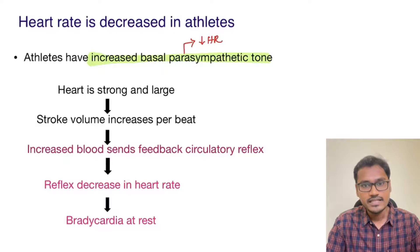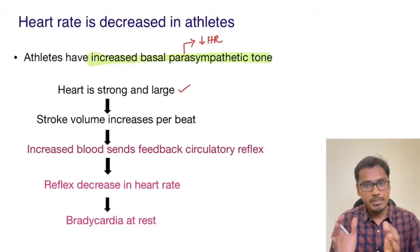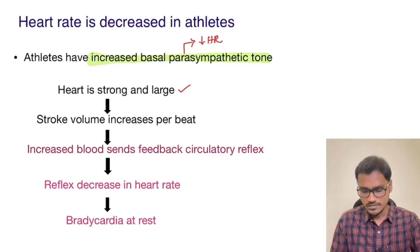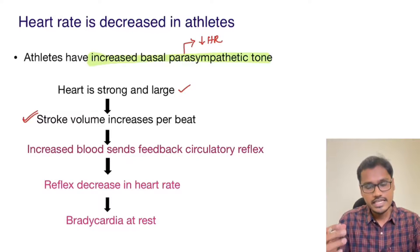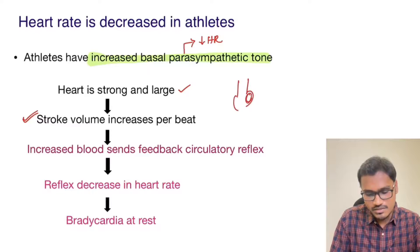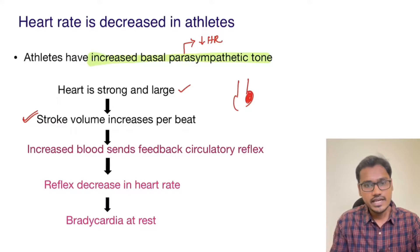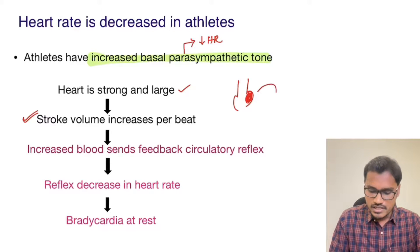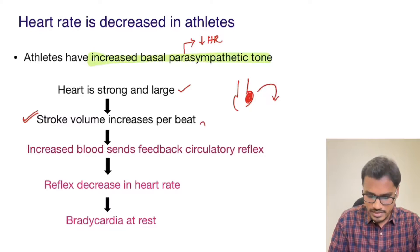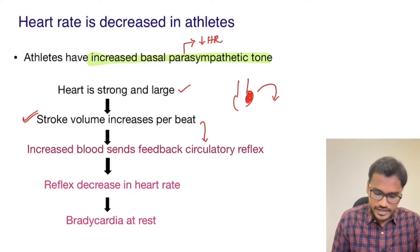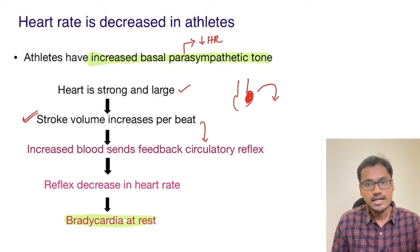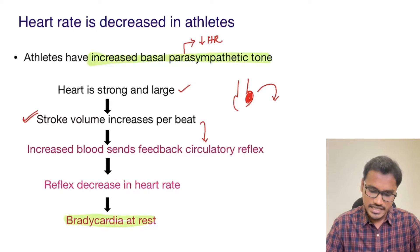So how is this happening? This happens because athletes have a strong as well as larger heart, so they are able to pump more amount of blood per heartbeat. This stroke volume increase in each beat will be sensed by various sensors, especially the baroreceptors, and it will cause a stretch. This will have a feedback inhibition via the parasympathetic system — a feedback circulatory reflex which is going to reflexively reduce the heart rate and finally cause bradycardia at rest. So this is the primary reason there is an increase in parasympathetic tone.